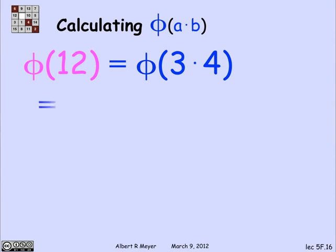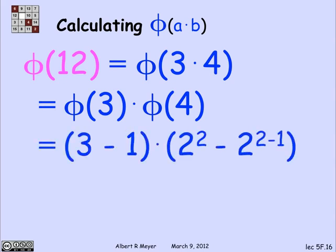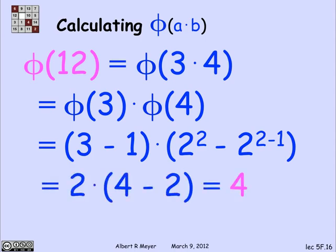So that means that phi of 12 is phi of 3 times phi of 4. But now I'm in great shape because 3 is a power of a prime, namely 3 to the 1, and 4 is a power of a prime, namely 2 squared. So applying the power of prime formulas, I get that phi of 3 is 3 minus 1 times 2 squared minus 2 to the 2 minus 1, which simplifies to 4, which is the answer that we saw before.